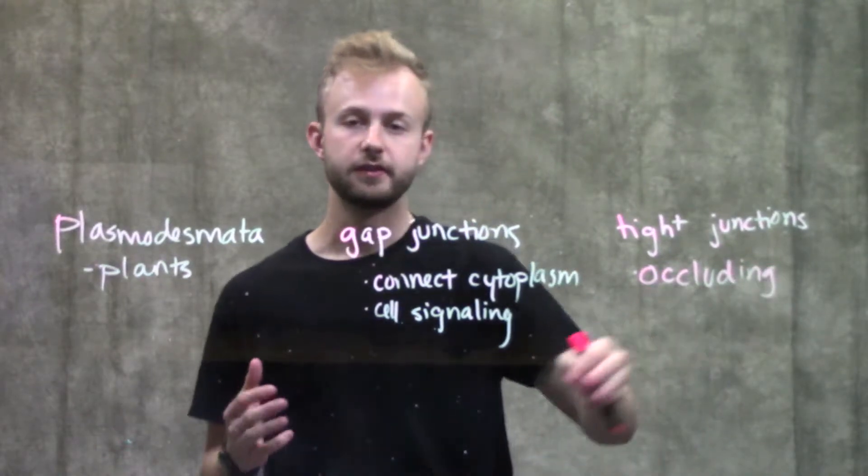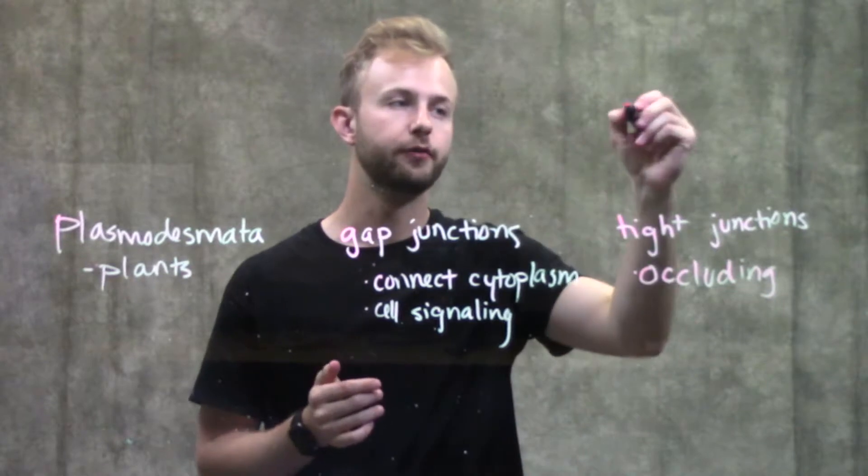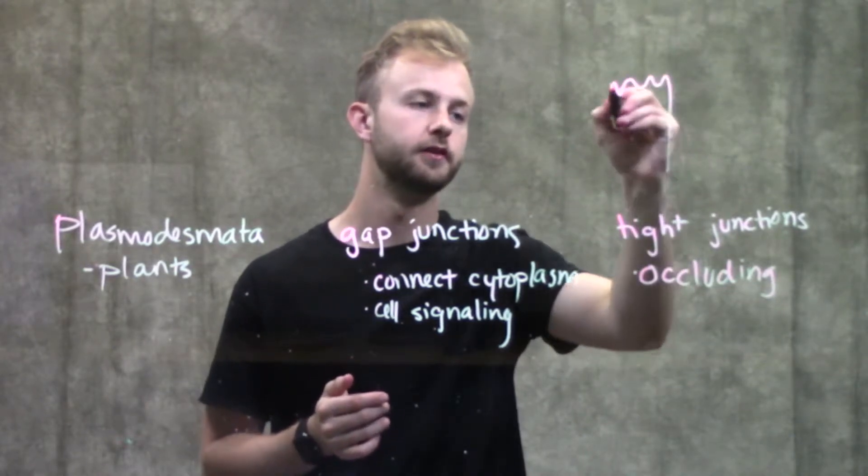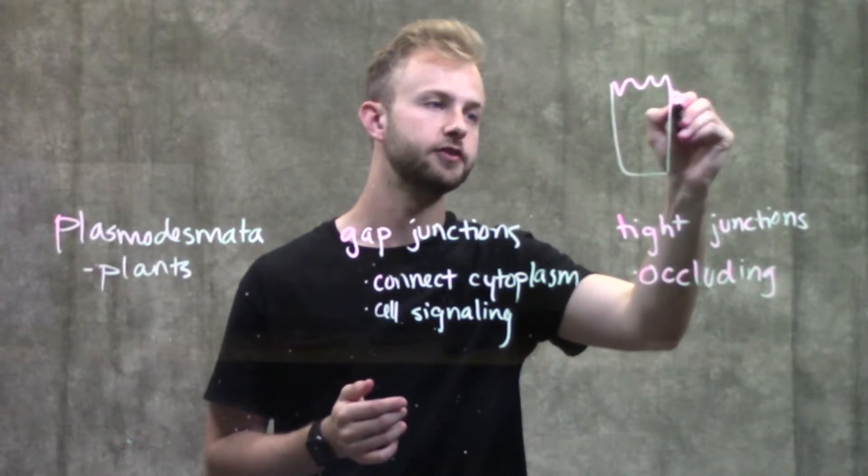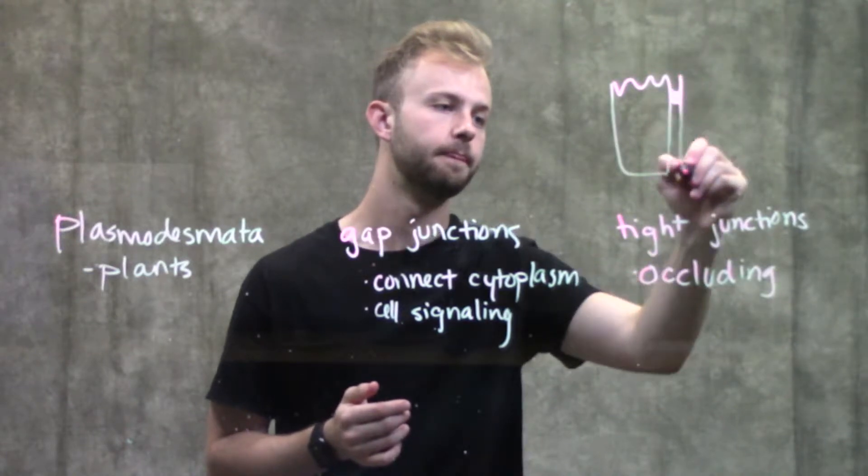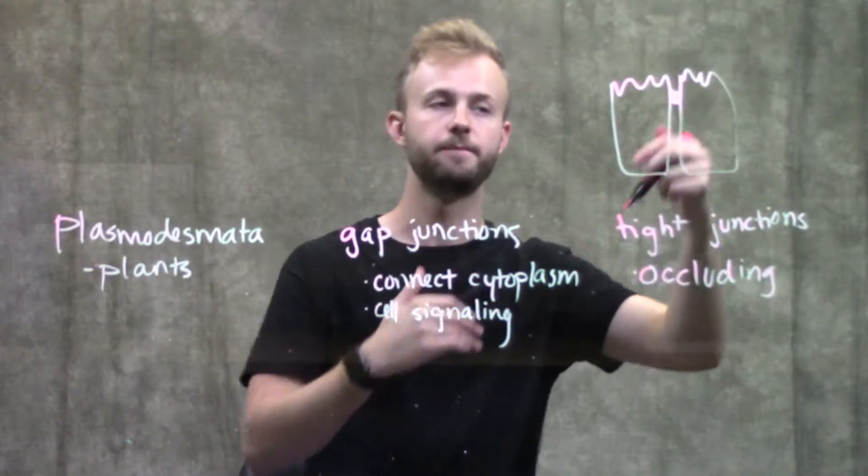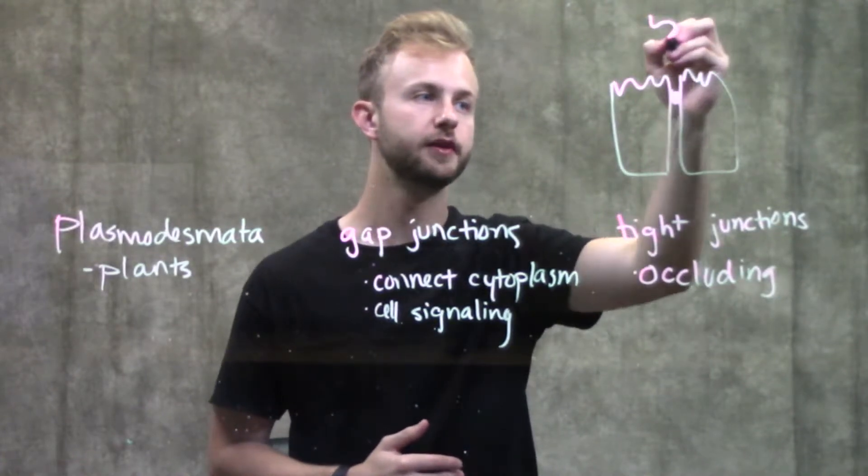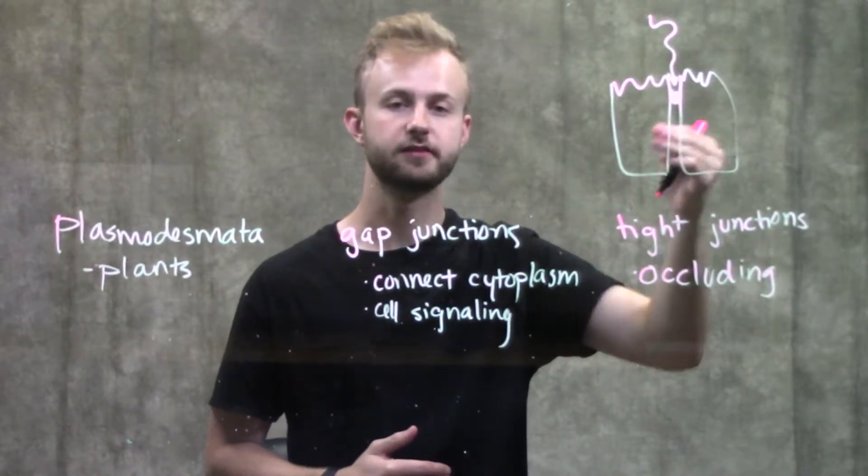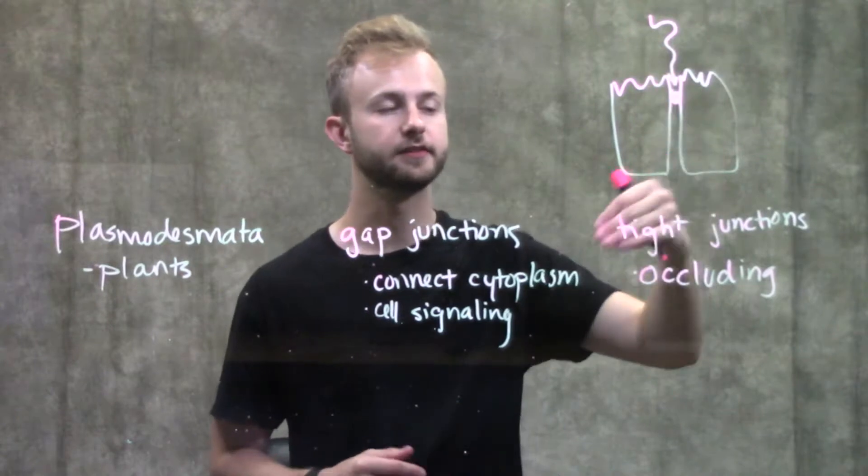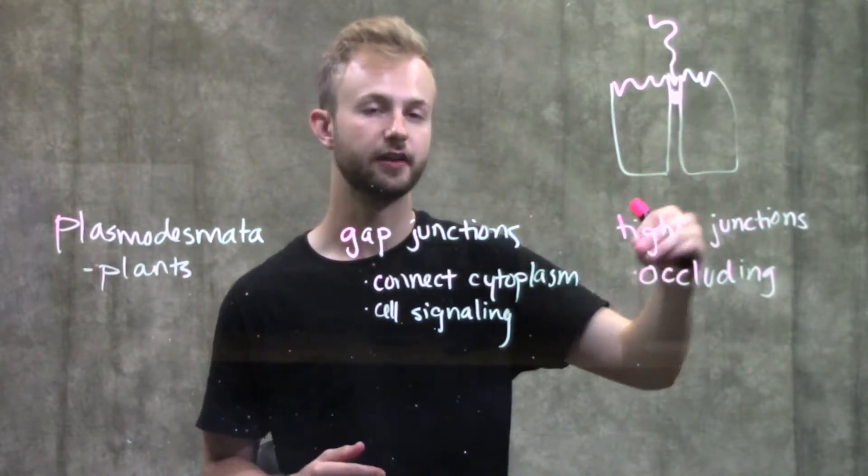Occluding means that they're not going to let things pass through. If we have two epithelial cells and we have our tight junction right here, we've created a barrier. On this side, the fluid is not going to be able to get past this tight junction, so you're not going to have things seeping between these cells and getting to the other side.